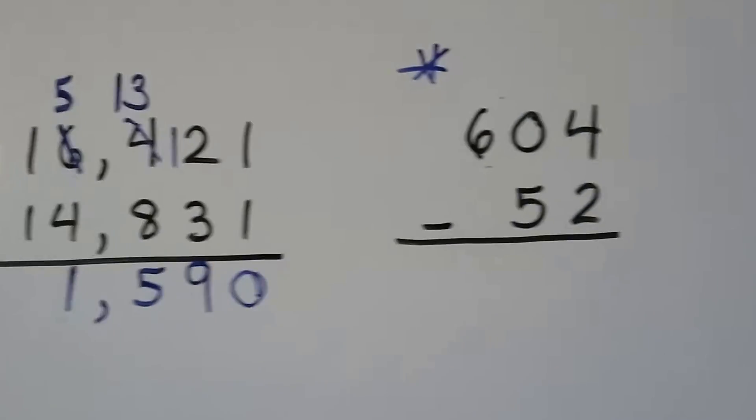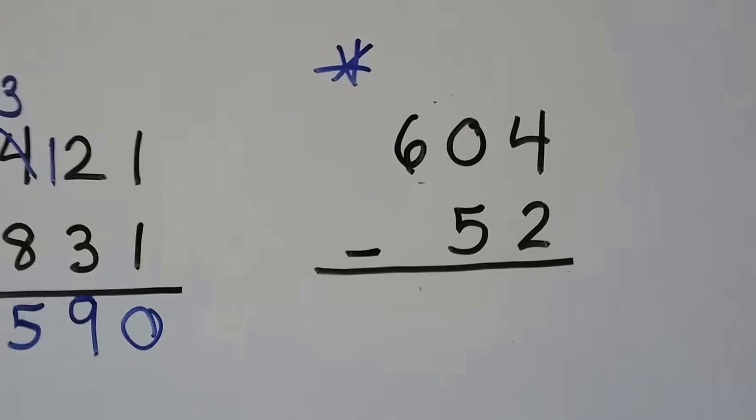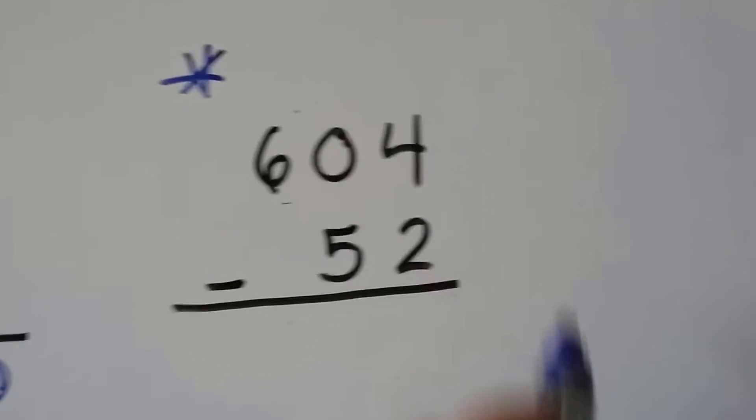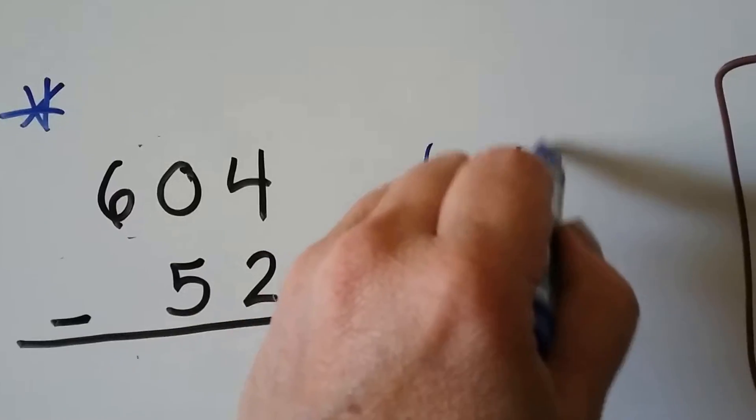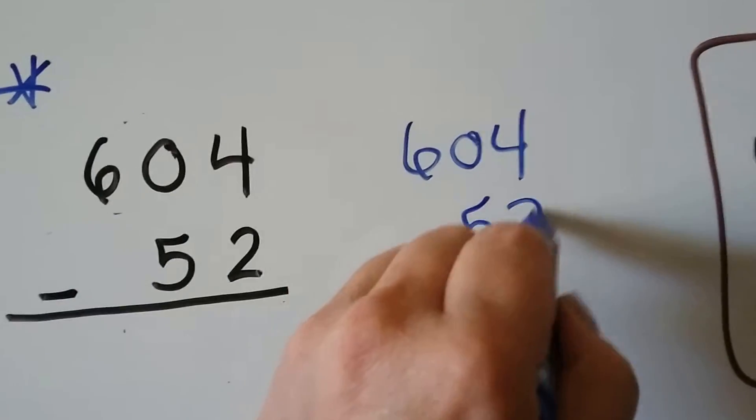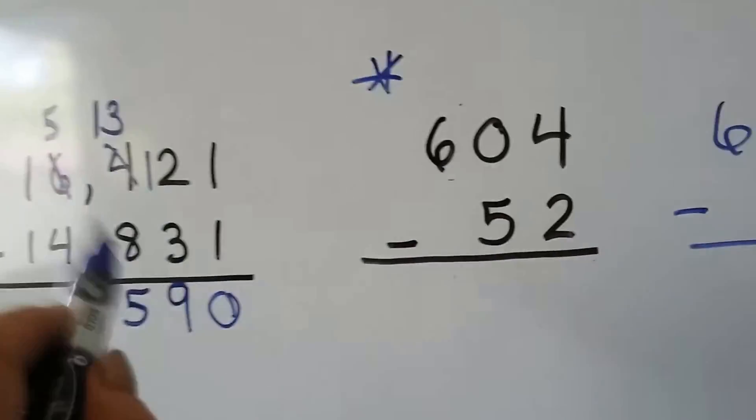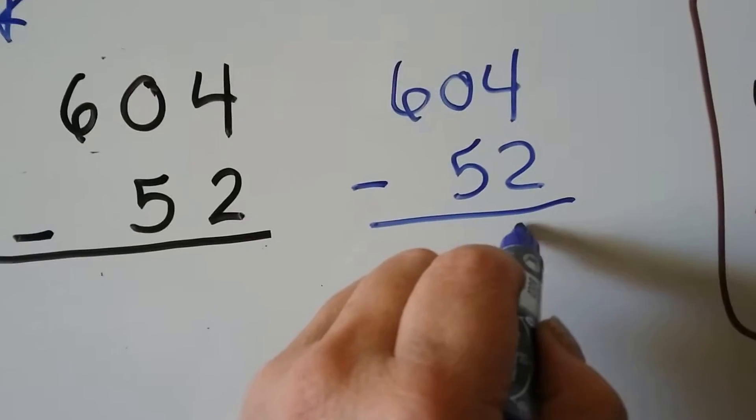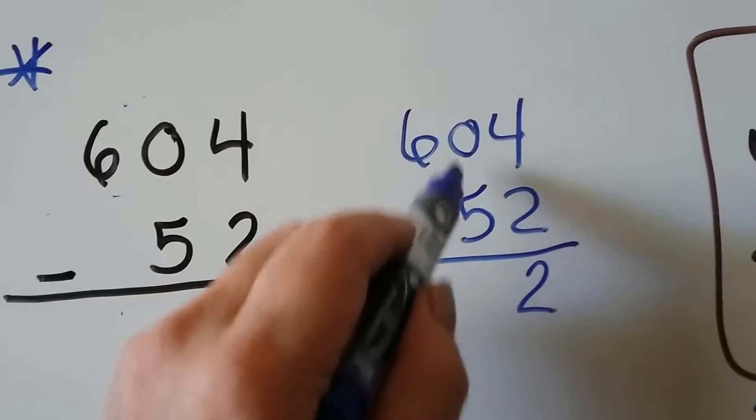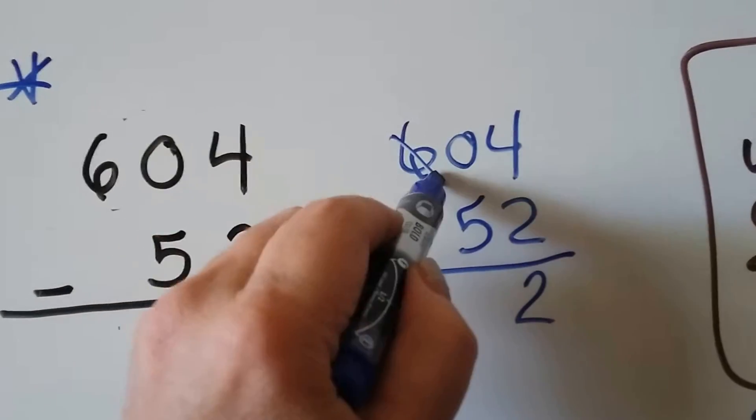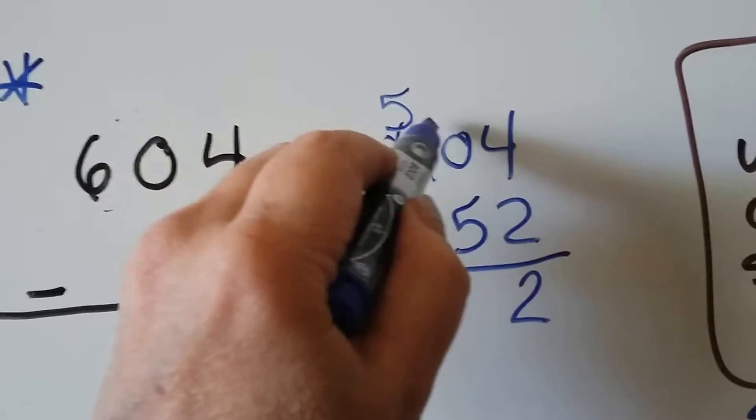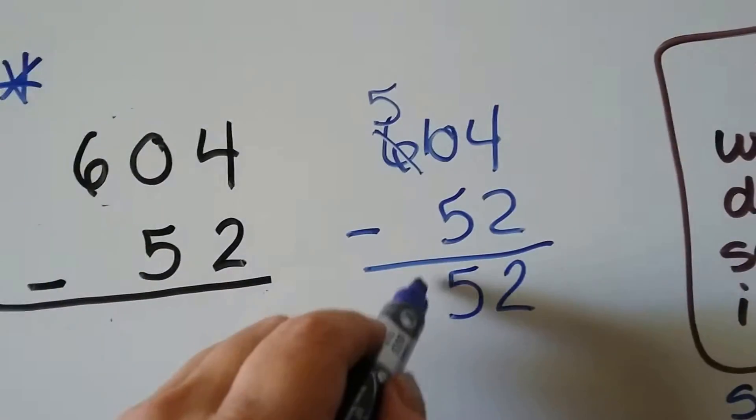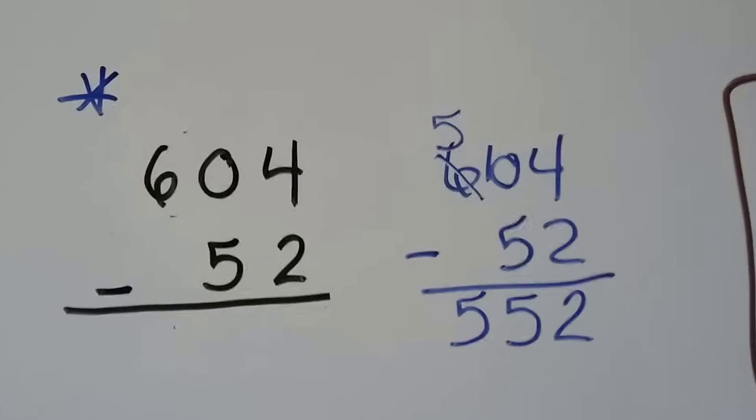Now, if you see this one, it's got an asterisk. And there's a reason for that. We can combine place values to subtract. So if we have 604 and we're taking away 52, we can do it this way, which is a little slower. 4 take away 2 is 2. 0 take away 5. We can't. So we have to regroup. That becomes a 5. That becomes a 10. 10 take away 5 is 5. And then we drop the 5 down. So that's the slow way.